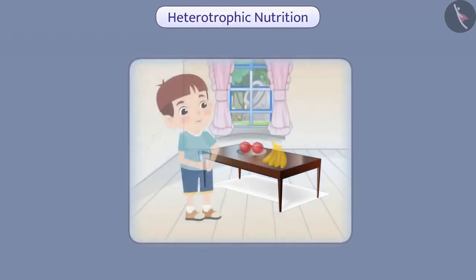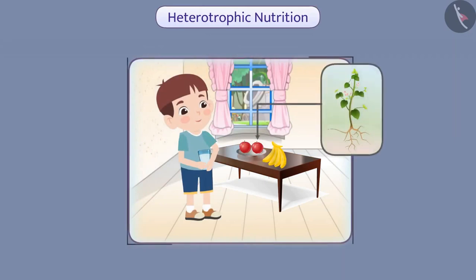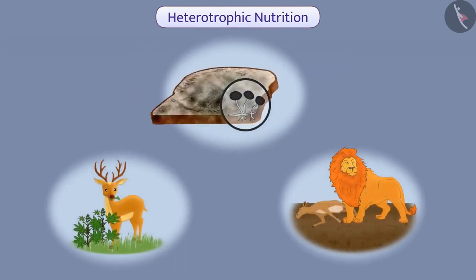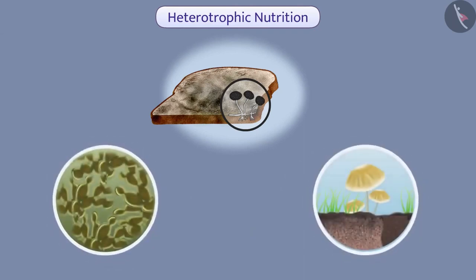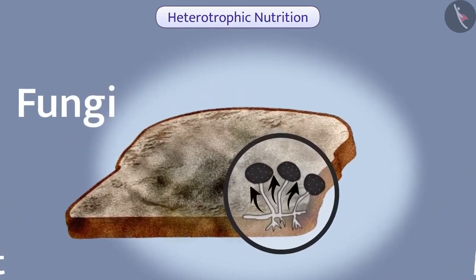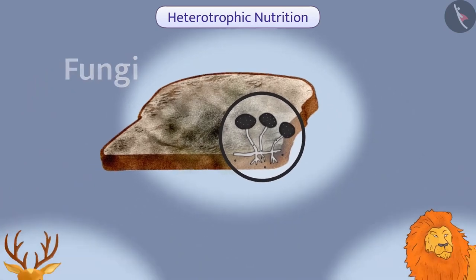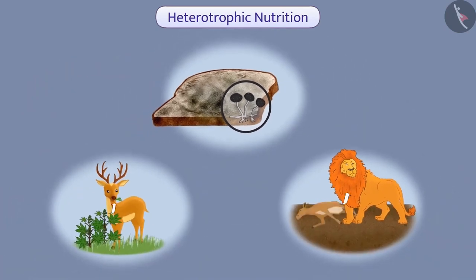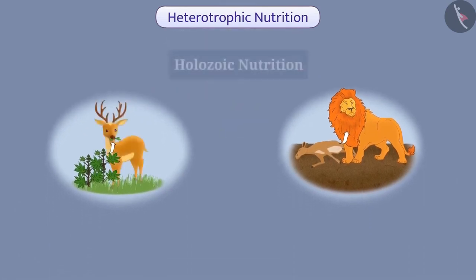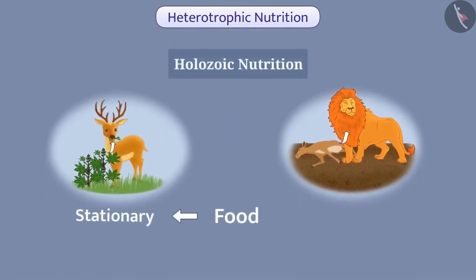Now let us understand heterotrophic nutrition in detail. Heterotrophic organisms depend on the food made by autotrophic organisms. Depending on the type of food, availability of food material and method of food intake, different heterotrophic organisms may have different forms of nutrition. For example, some heterotrophic organisms such as yeast, mushroom and fungi break down food material outside their body and then absorb it, while other organisms ingest food that is digested inside the body.